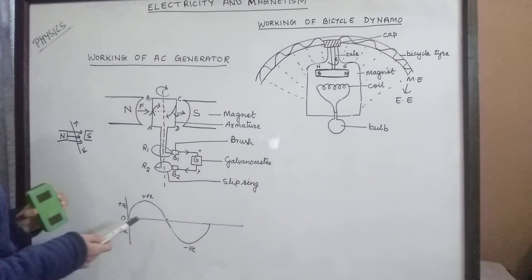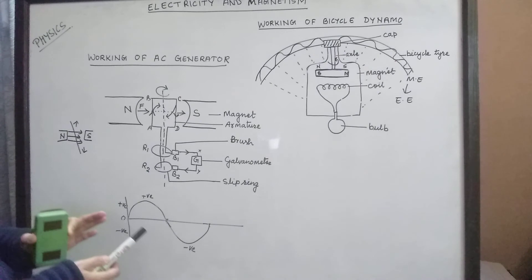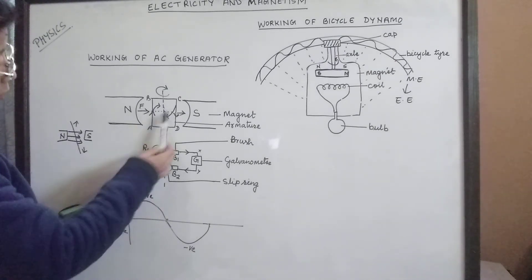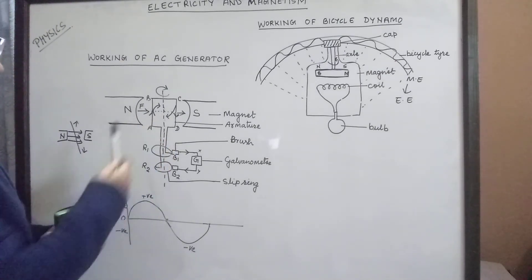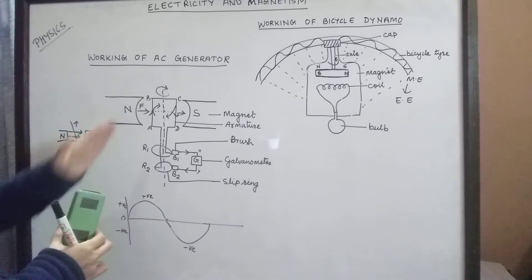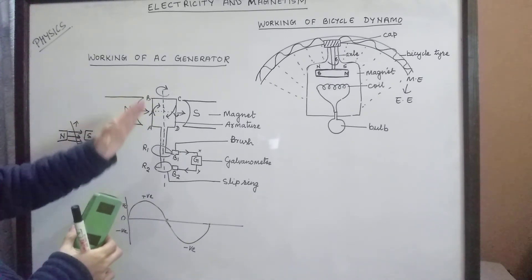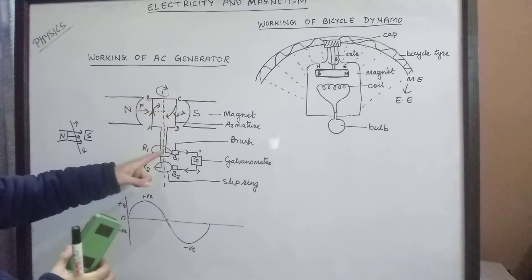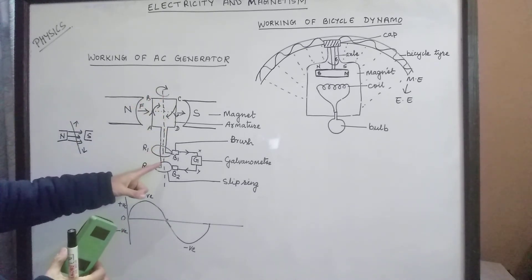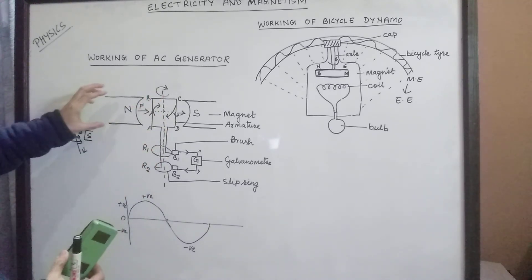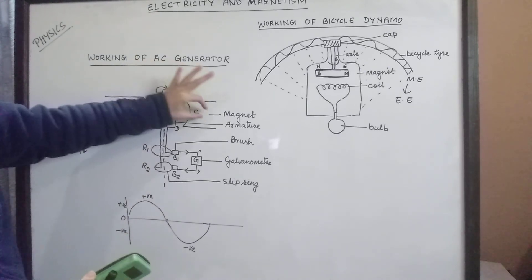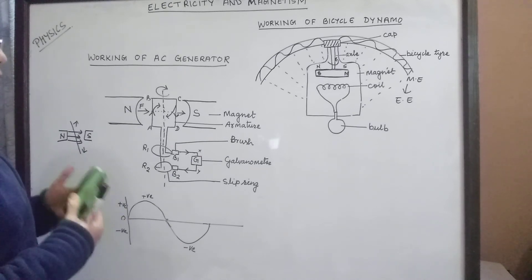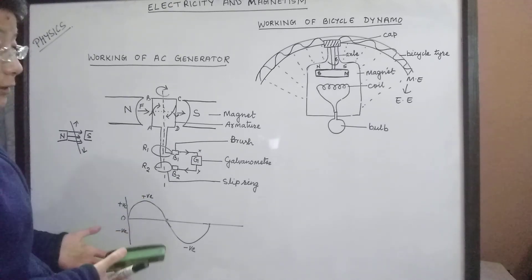If we want to increase the magnitude of the induced current, the rotation of the armature should be made faster by increasing its speed. Alternatively, the number of coil turns in the armature can be increased, or a stronger magnetic field can be used. These are the ways by which the magnitude of induced current can be increased in an AC generator.